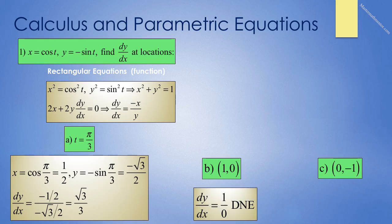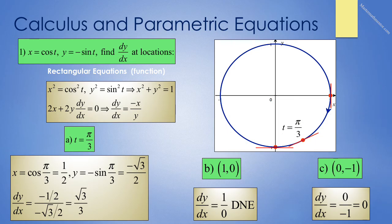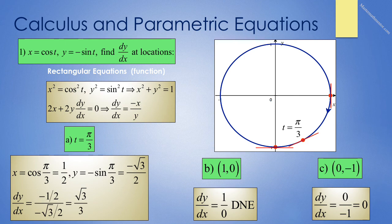At the point (1, 0), dy/dx equals negative 1 over 0, which does not exist. At the point (0, negative 1), dy/dx equals 0 over negative 1, which is 0. The graph of x squared plus y squared equals 1 is a circle of radius 1, but the parametric curve x equals cosine t, y equals negative sine t traces this circle with a clockwise orientation. At t equals pi/3 the tangent has a positive slope; at (1, 0) the tangent is vertical; at (0, negative 1) the tangent is horizontal with slope 0.